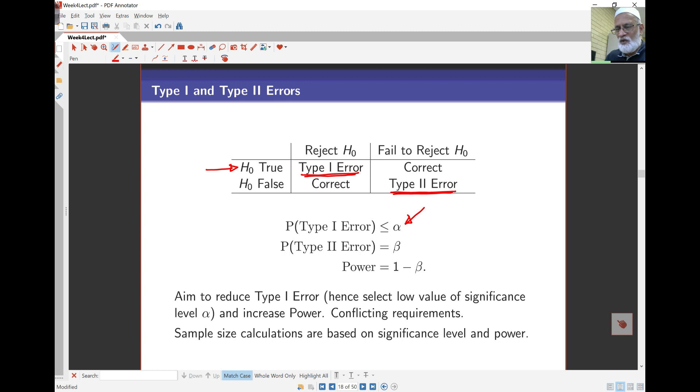What we want is the probability of Type I error to be low and the power to be high. These are actually conflicting, contradictory requirements. Sample size calculations based on significance level and power try to optimize this.